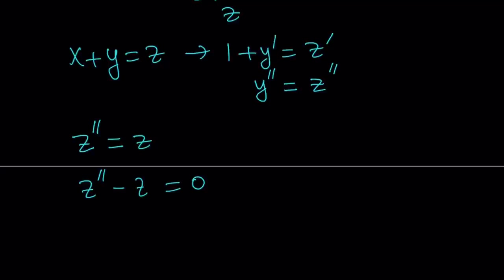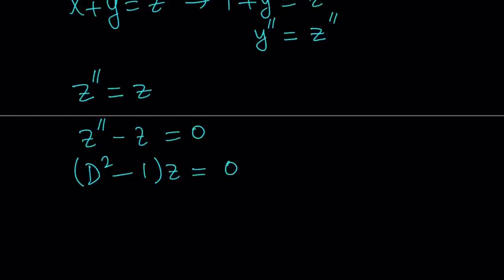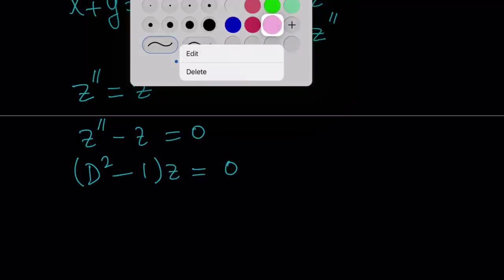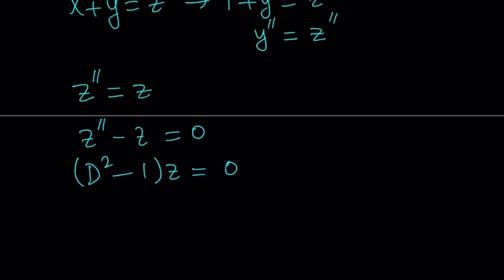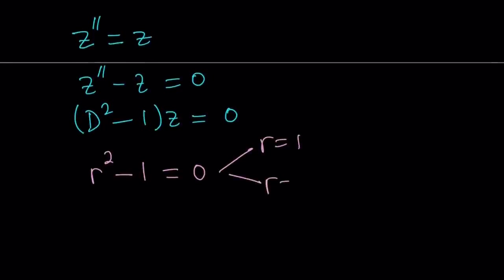By using the differential operator — capital D — I can write this as D squared minus 1 applied to z, where D squared means take the second derivative and 1 is like a unit element. The cool thing about writing this using the differential operator is we can find the characteristic equation by replacing D with r. So our characteristic equation is r squared minus 1 equals 0.